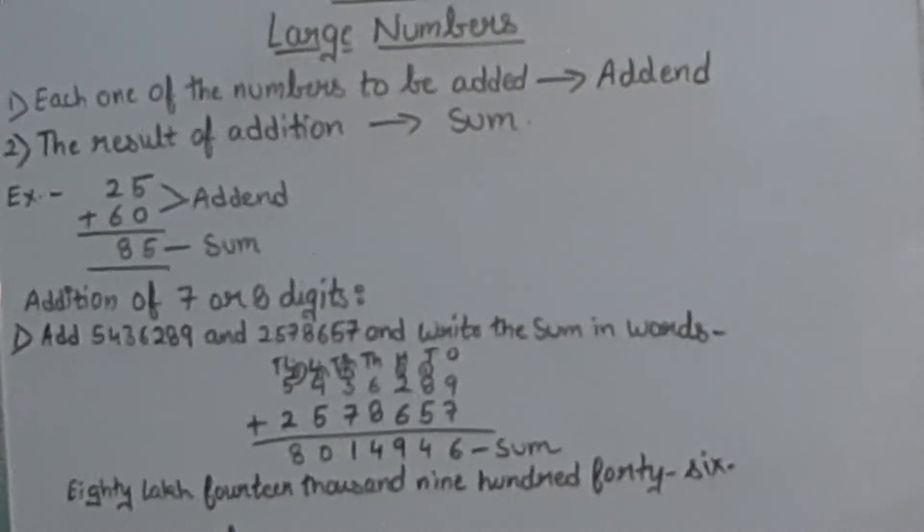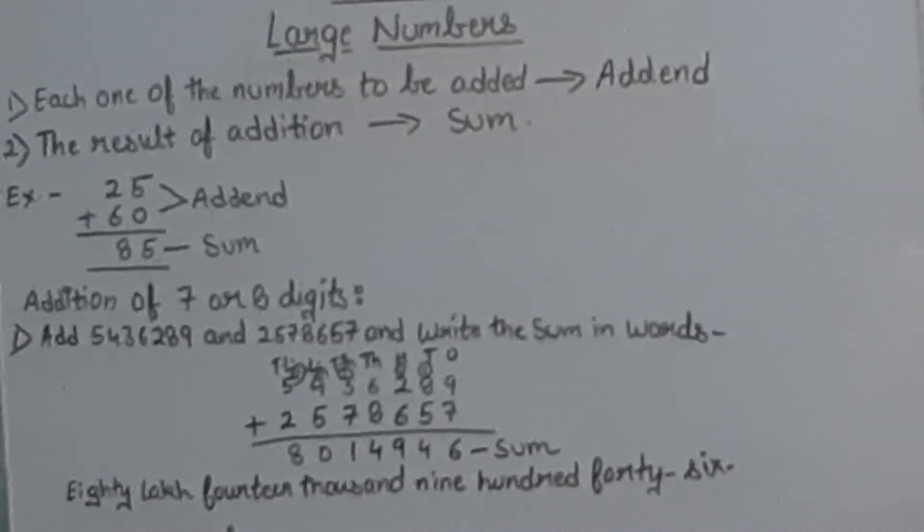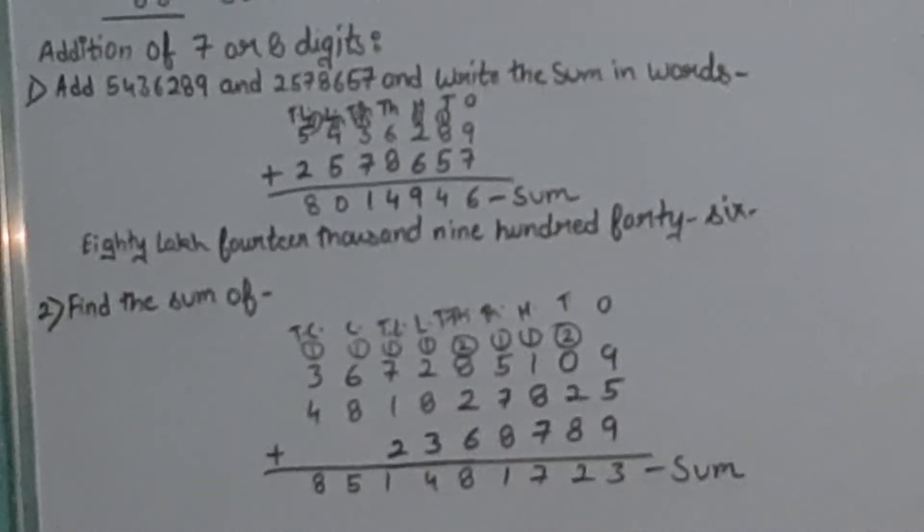This is the sum of this question. Now we have to write this sum in words. Since we've already made the divisions, it's very easy to write this sum in words: eighty lakh fourteen thousand nine hundred forty-six.